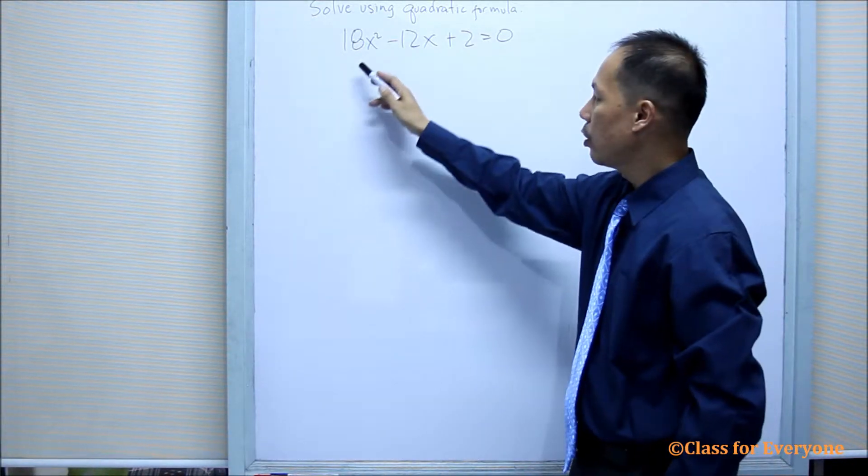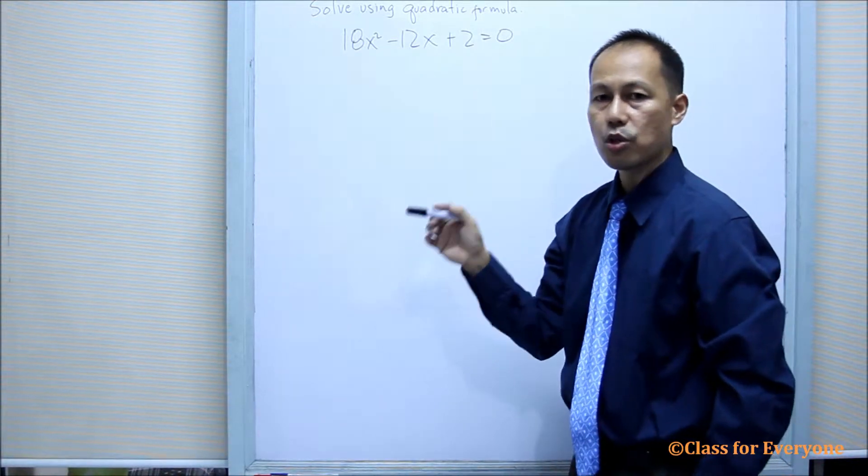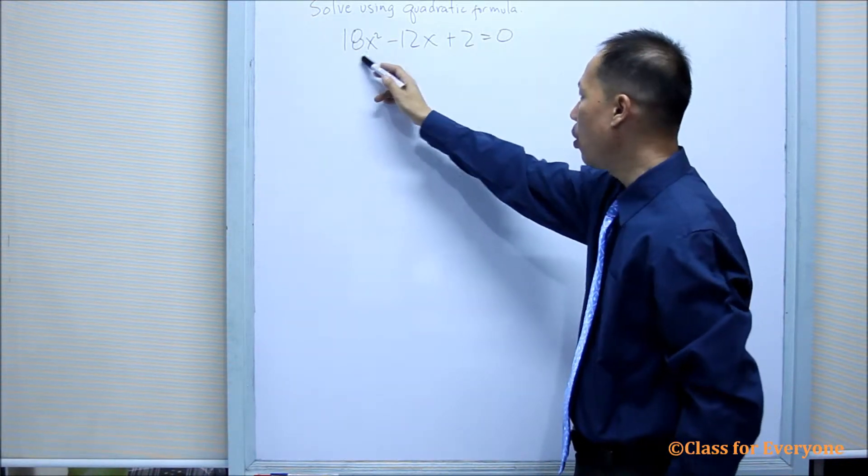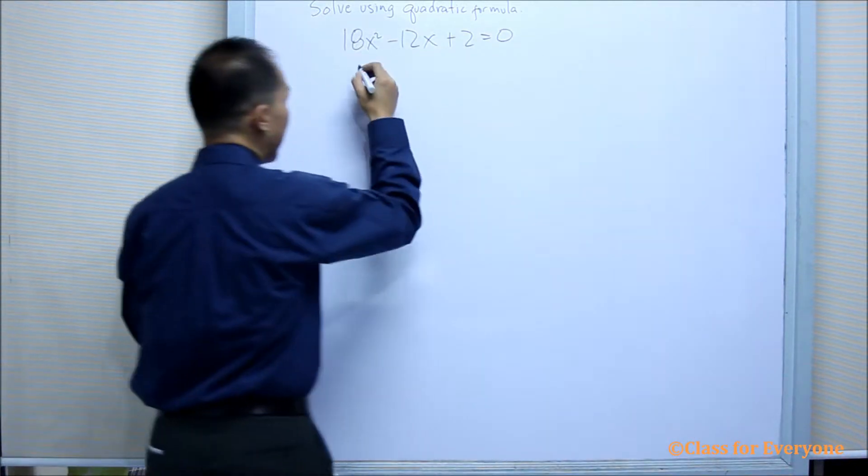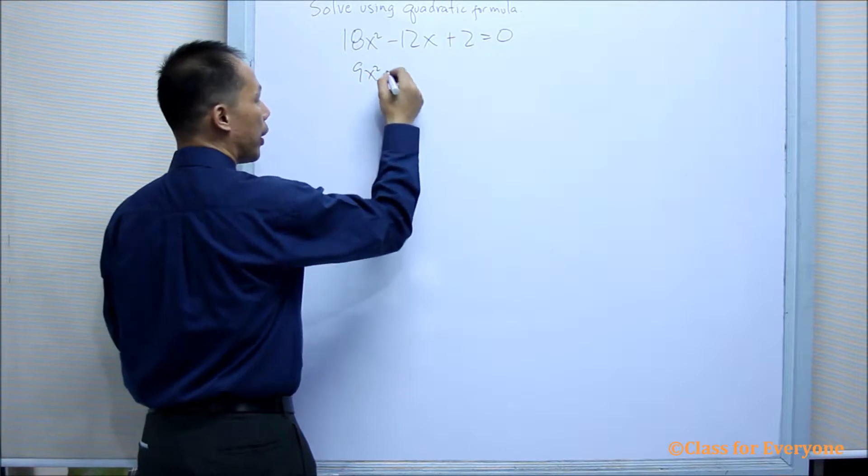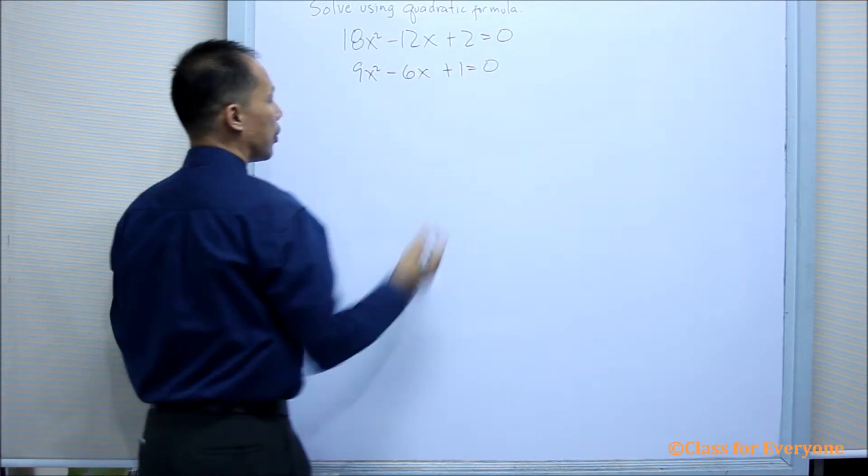You'll notice that the numerical coefficients are all divisible by 2. So we can now first divide all of the numbers by 2, giving us 9x squared minus 6x plus 1 equals 0.